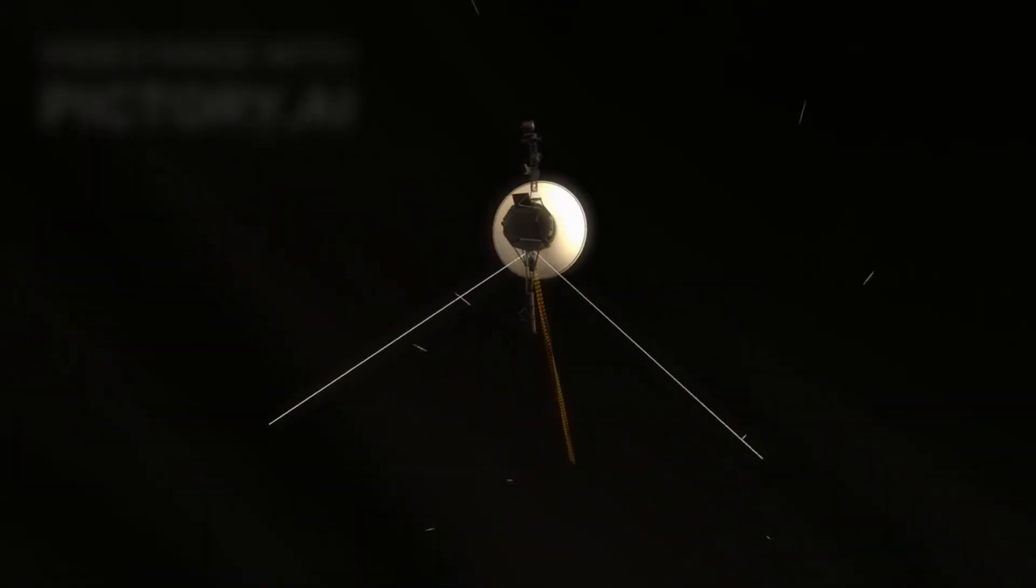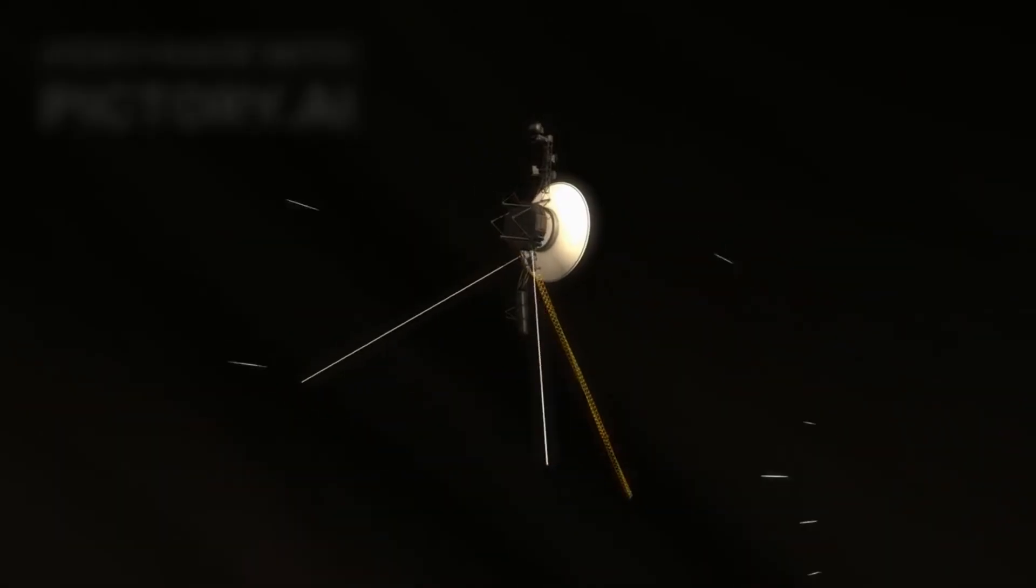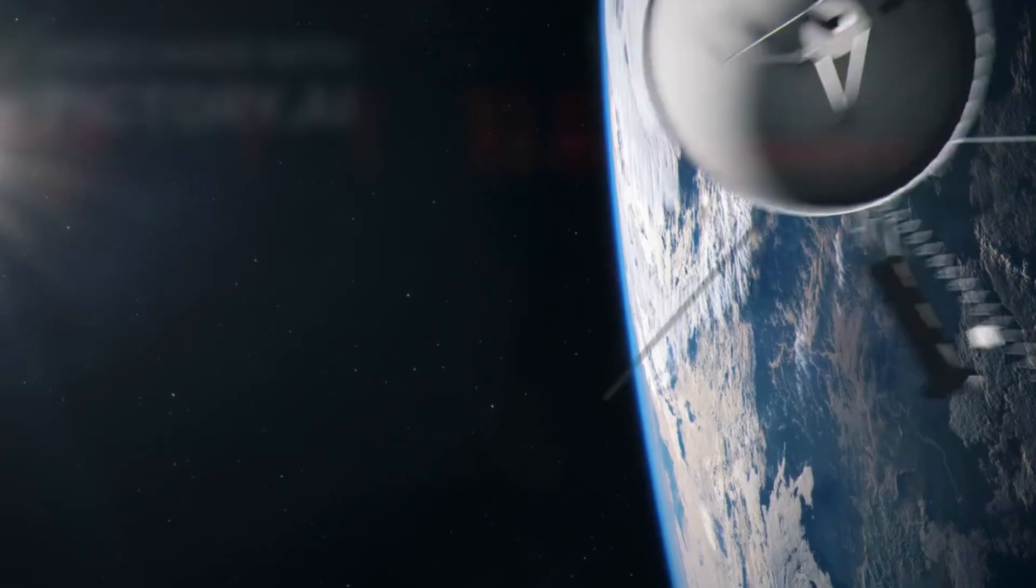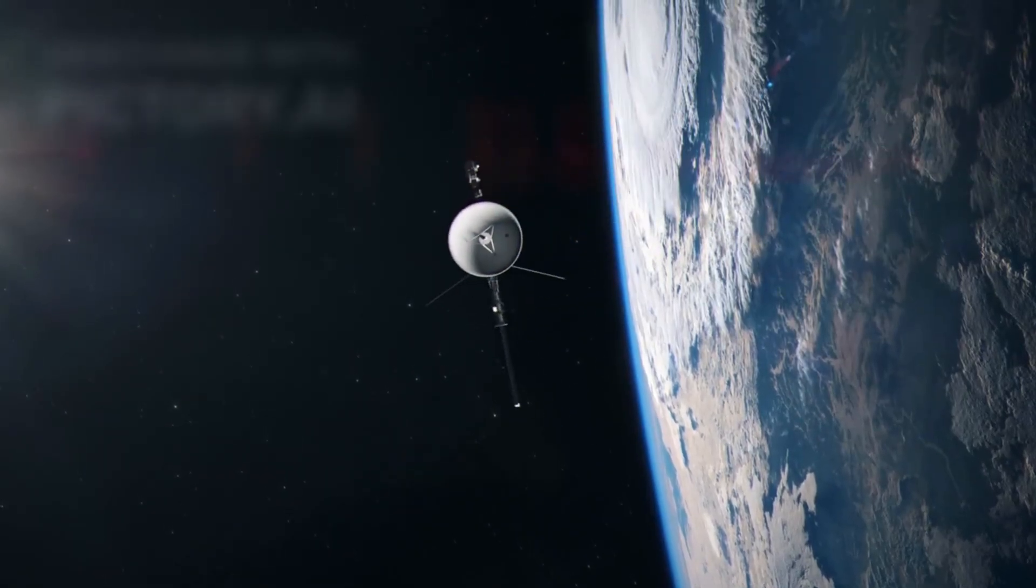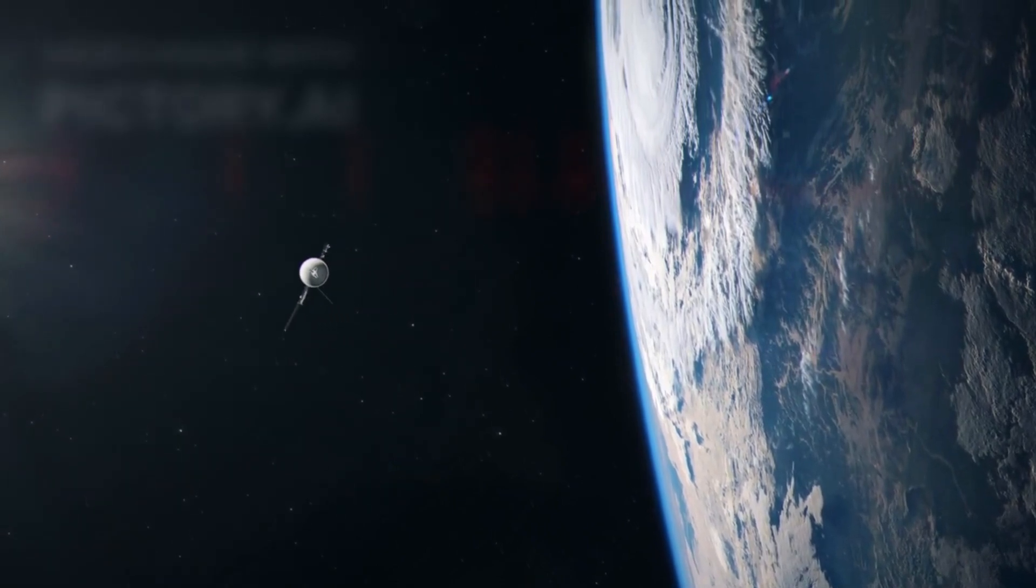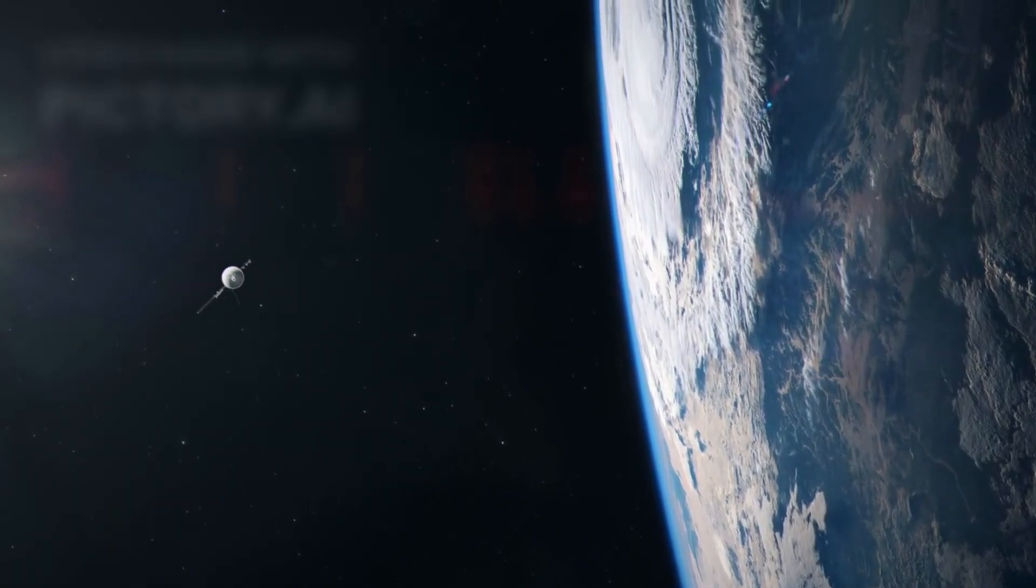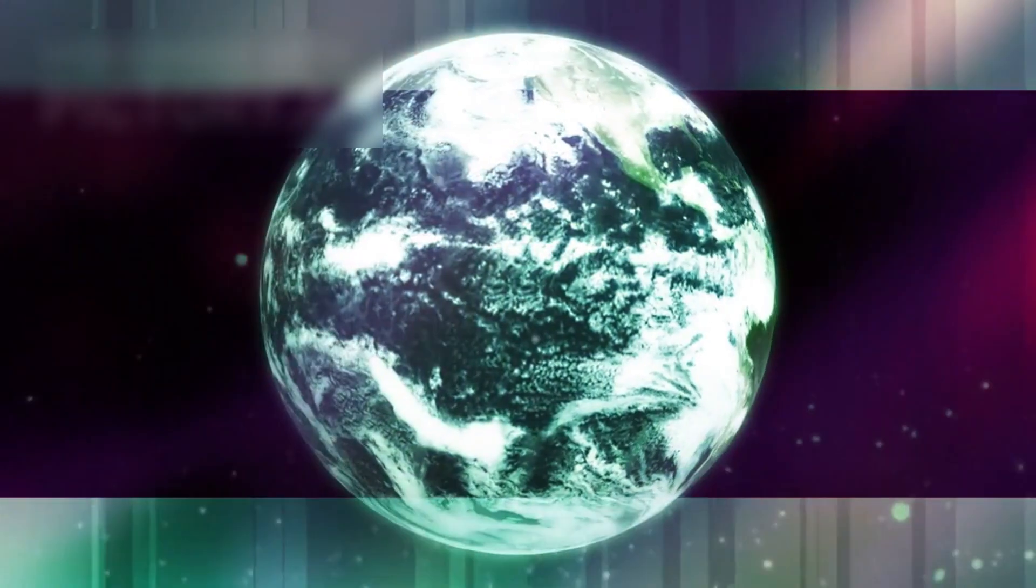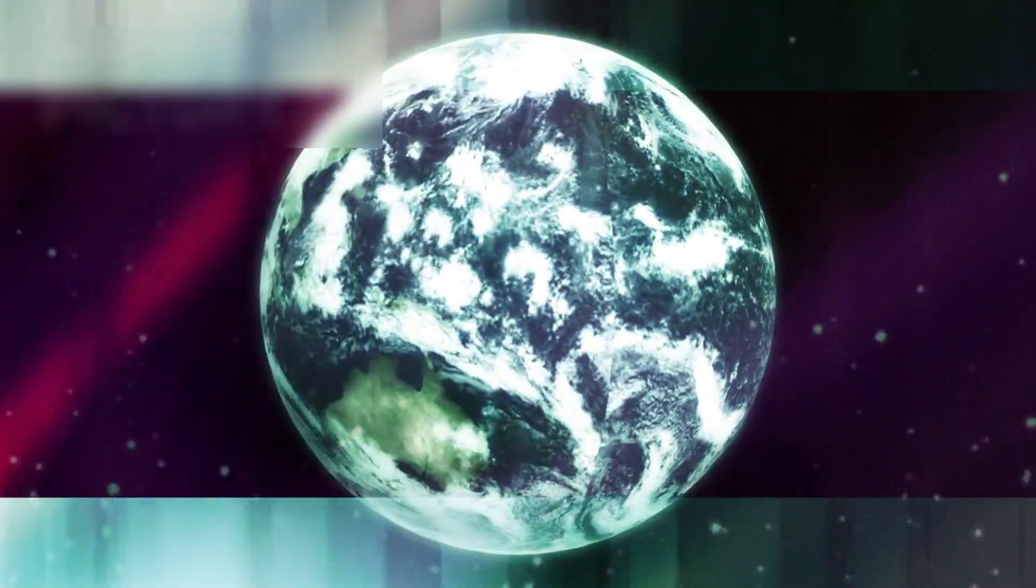Now, consider Voyager 1, the fastest and most distant human-made object. Launched in 1977, it traveled at 38,000 mph, and yet it took 35 years to exit the solar system. That alone is a testament to how vast even our local cosmic neighborhood truly is.